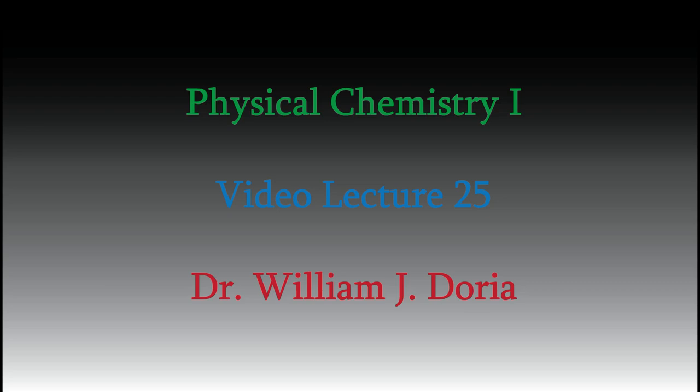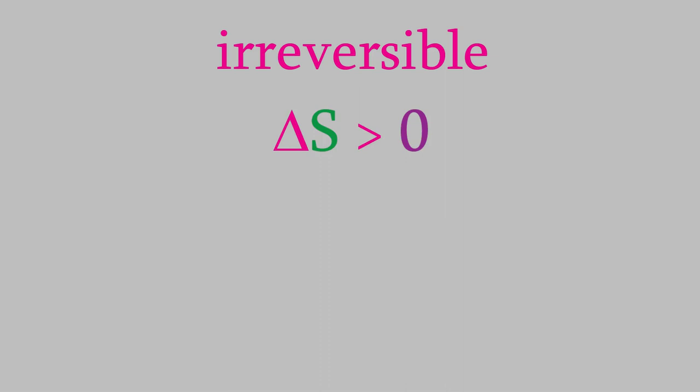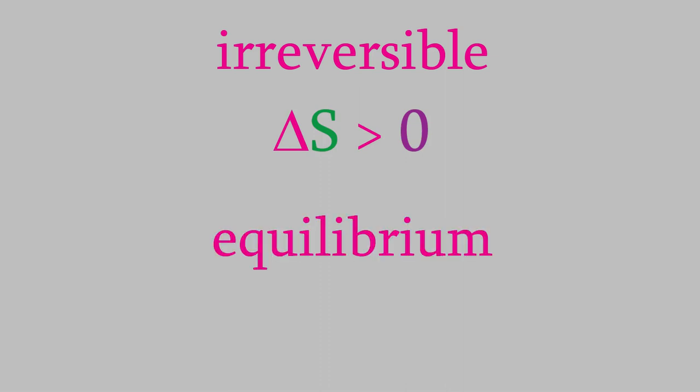Hi, and welcome back to my videos for Physical Chemistry 1. We've spent the last several videos looking at entropy and exploring the way it's related to other thermodynamic properties of a system. For example, we've seen that the entropy of an irreversible process is always a positive number, and the entropy of a reversible process at equilibrium is zero. Today, we'll see that these concepts cause behaviors that we can observe in the real world, and we'll talk about how they apply to chemical reactions.